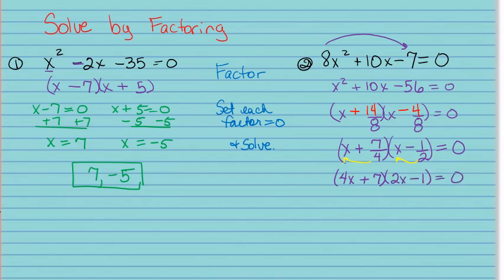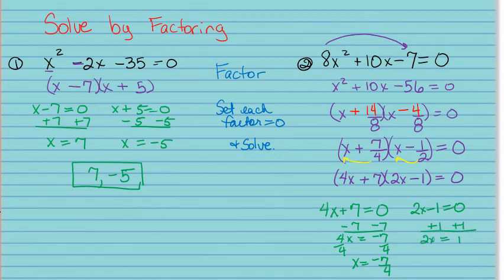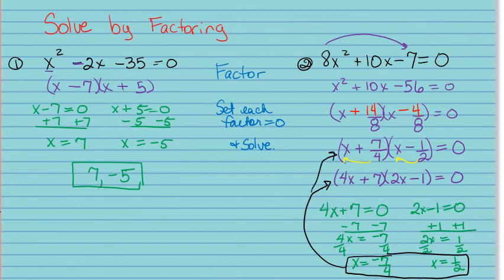Applying bottoms up gives 4x plus 7 and 2x minus 1. Setting each factor equal to zero: 4x plus 7 equals 0 gives x equals negative 7/4, and 2x minus 1 equals 0 gives x equals 1/2. Those answers should look familiar — they match what we found in our factoring shortcut.